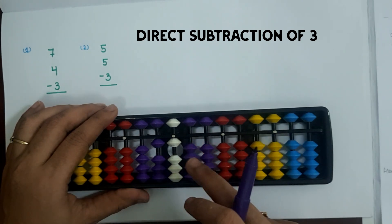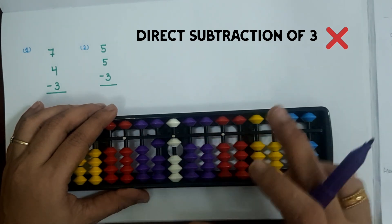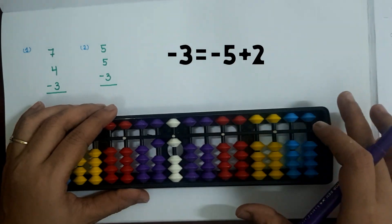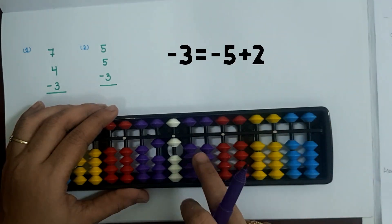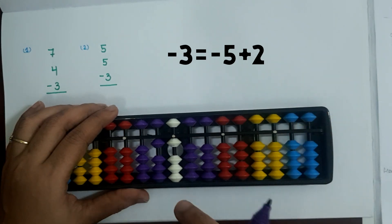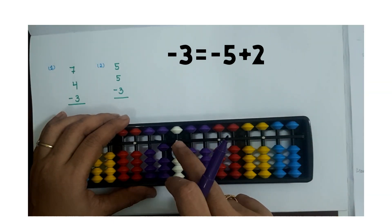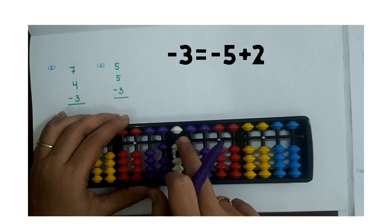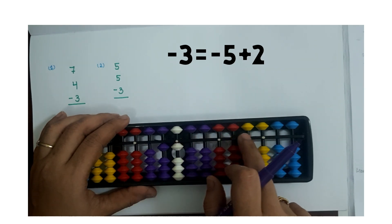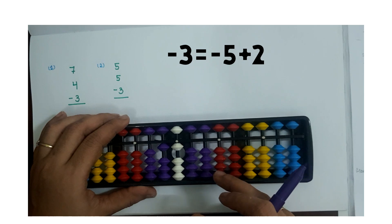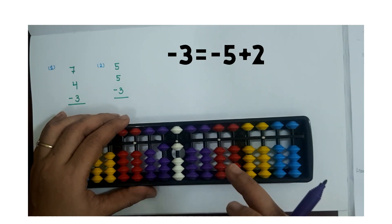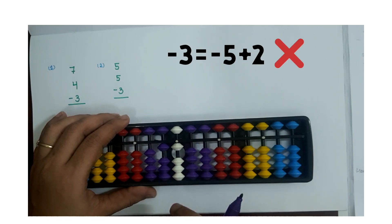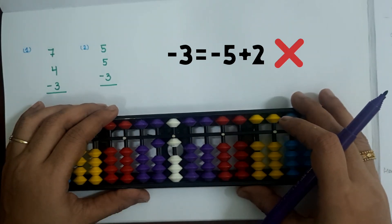Can we use the small friend subtraction of 3? The formula for small friend subtraction of 3 is: minus 3 equals minus 5 plus 2. For small friend subtraction of 3 we have to subtract 5 at one slot. But at one slot the upper bead, the bead of 5, is not touching the value bar, so we cannot subtract 5. Because of that we are unable to apply the small friend subtraction of 3. So how do we solve this sum?